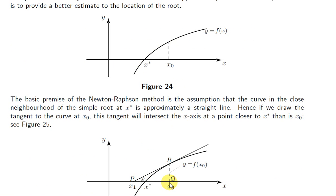So if x₀ is our first approximation to the root, then this point p, which we call x₁, is a better approximation — x₁ is closer to x*. If the curve from x* to this point was exactly a straight line, the tangent would coincide with the curve, and x₁ would equal x*. That would be the ideal situation if this were a perfect straight line.